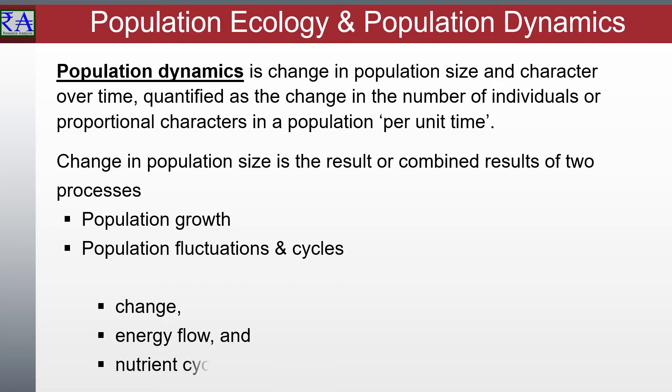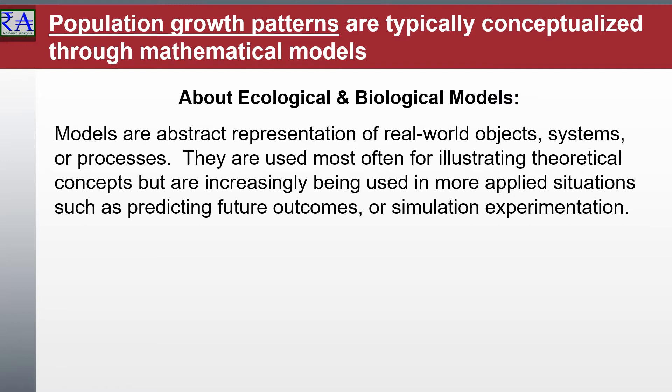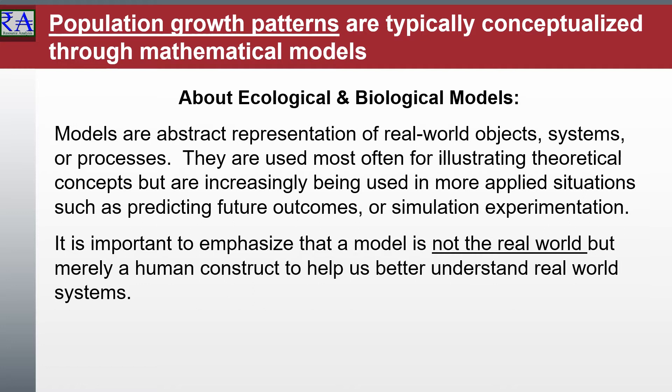Key factors for study are those influencing natality, mortality, immigration, and emigration. Two types of population growth patterns may occur depending on specific environmental conditions. An exponential growth pattern, with a J-shaped curve, occurs in an ideal, unlimited environment. A logistic growth pattern, with an S-shaped curve, occurs when environmental pressures slow the rate of growth.